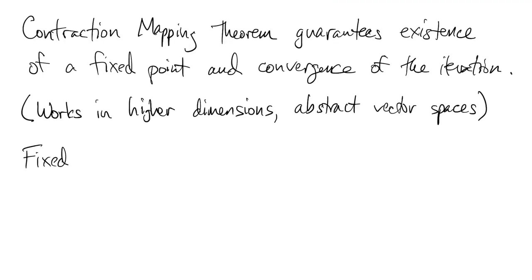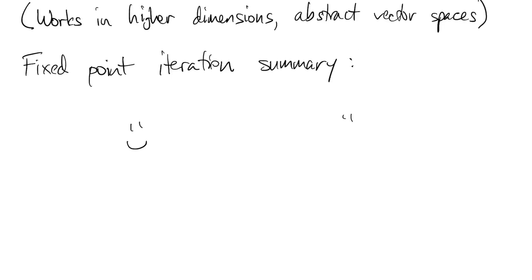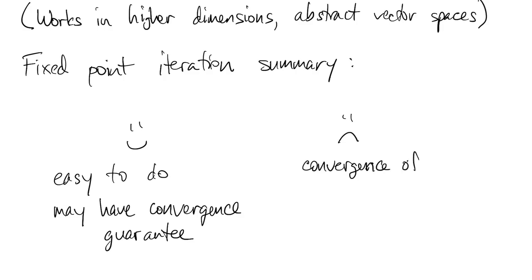So if we summarize the good points and the bad points of fixed point iteration, on the good side of things, it's easy to use. And you may be able to get a convergence guarantee. But on the other hand, that guarantee can be hard to come by and it might not even be true depending on your particular problem. And more to the point, it's relatively slow compared to what we're going to do next.